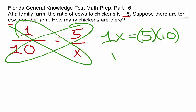1x we can write as x, since that 1 is implied. 5 times 10 is equal to 50.